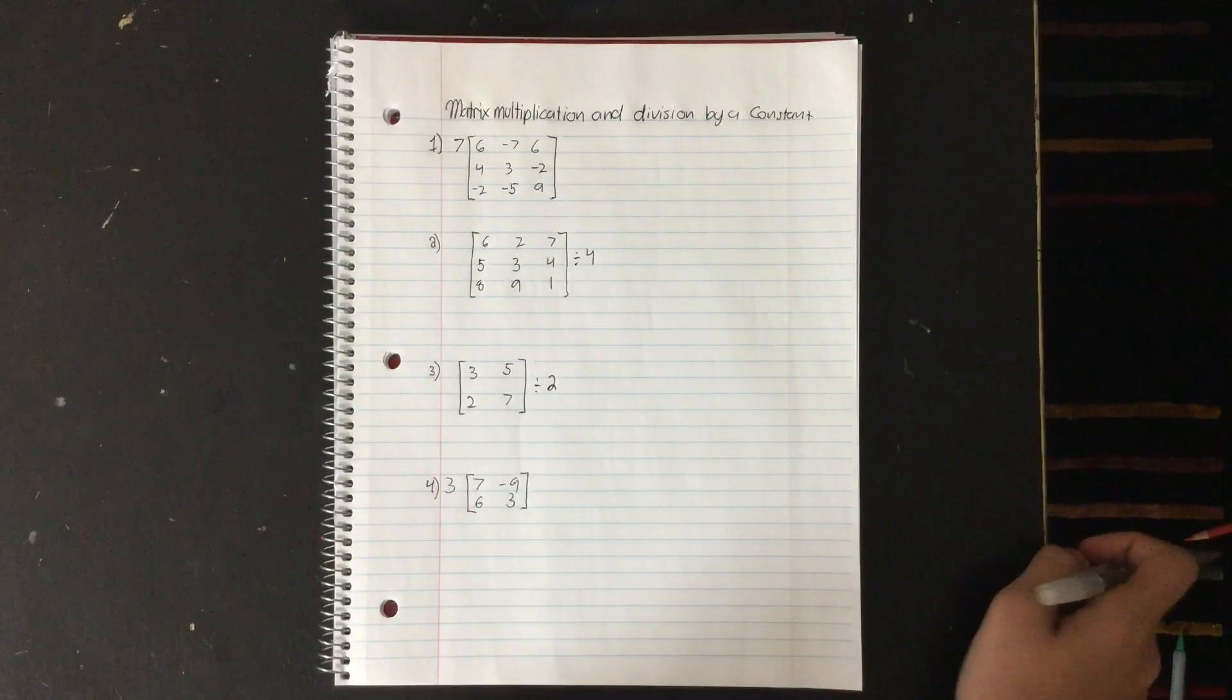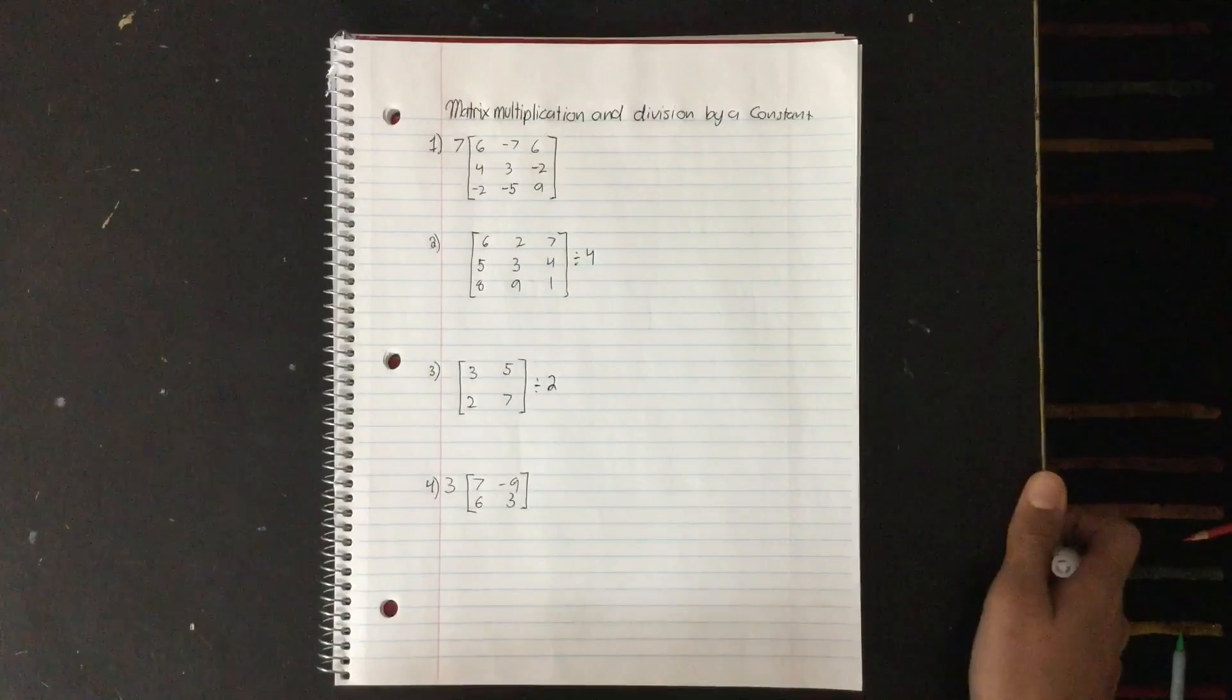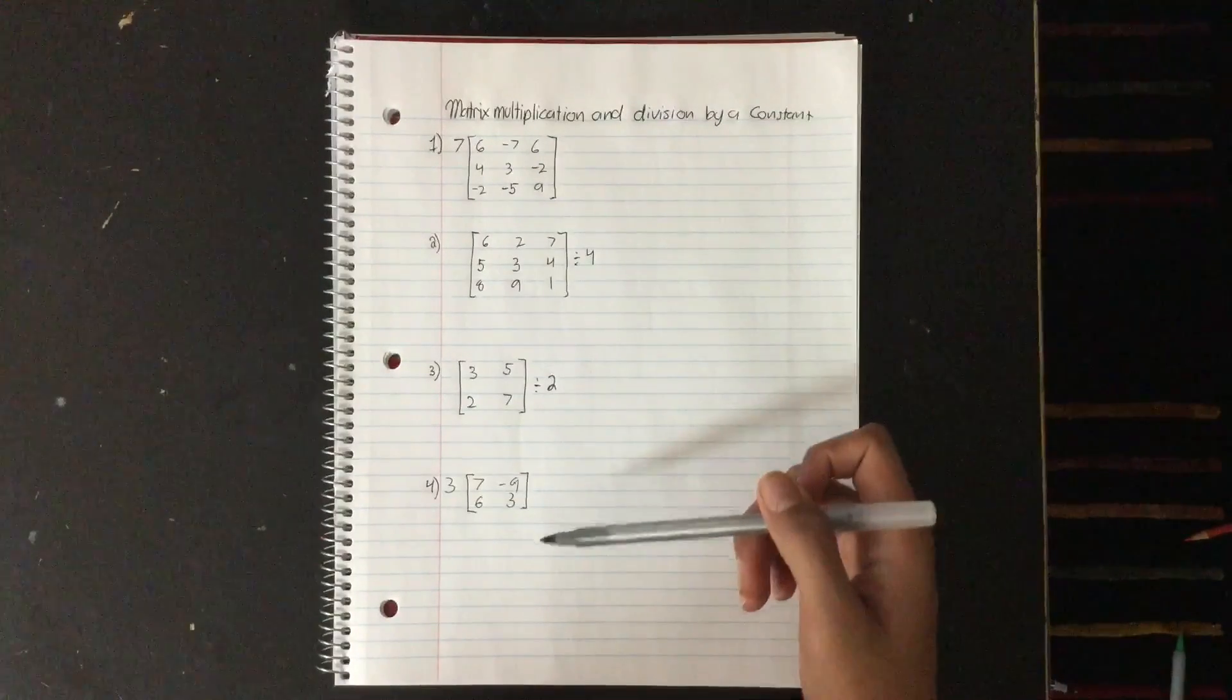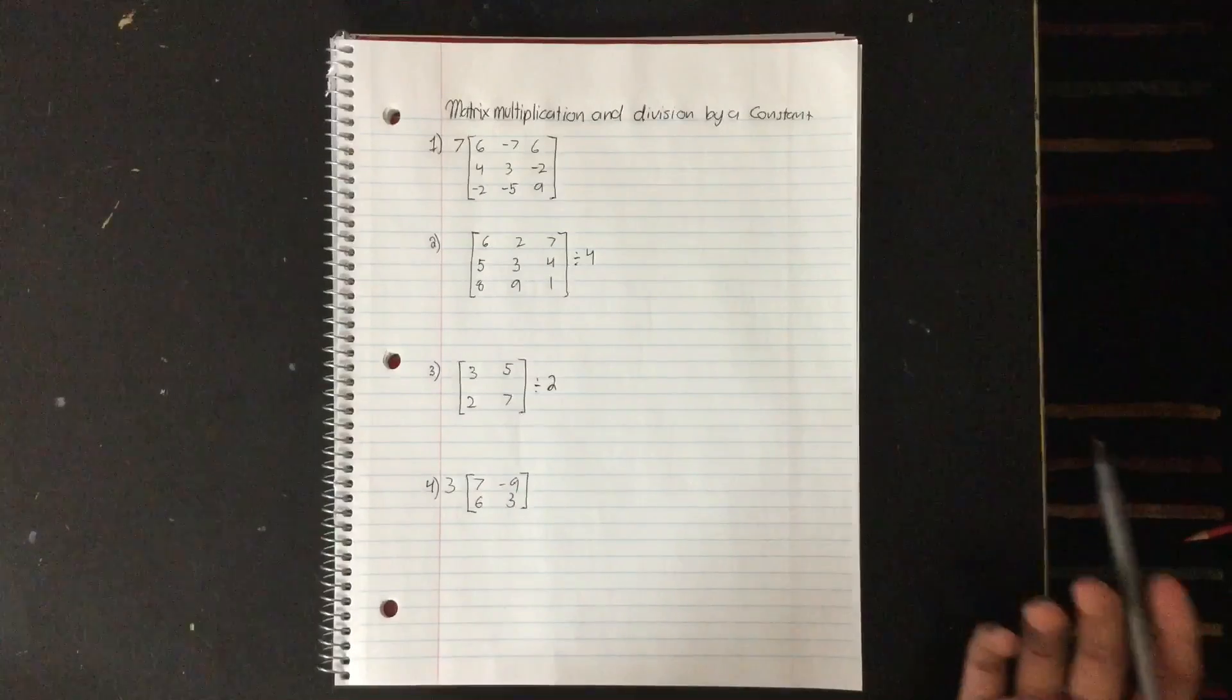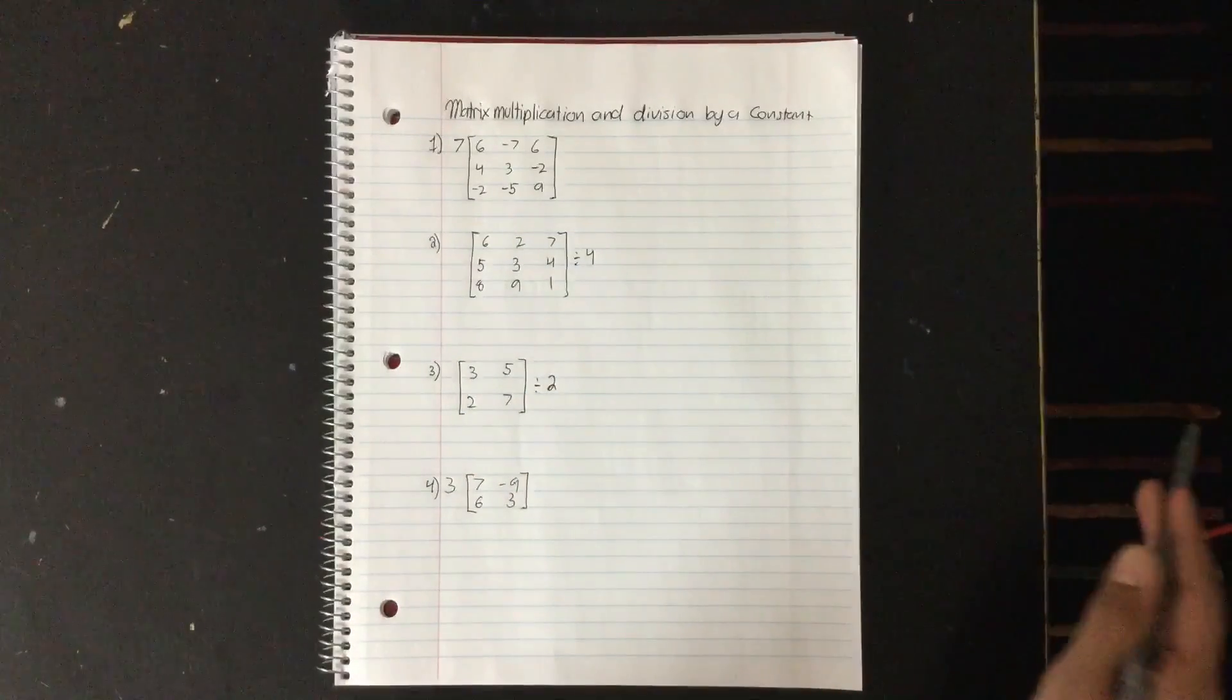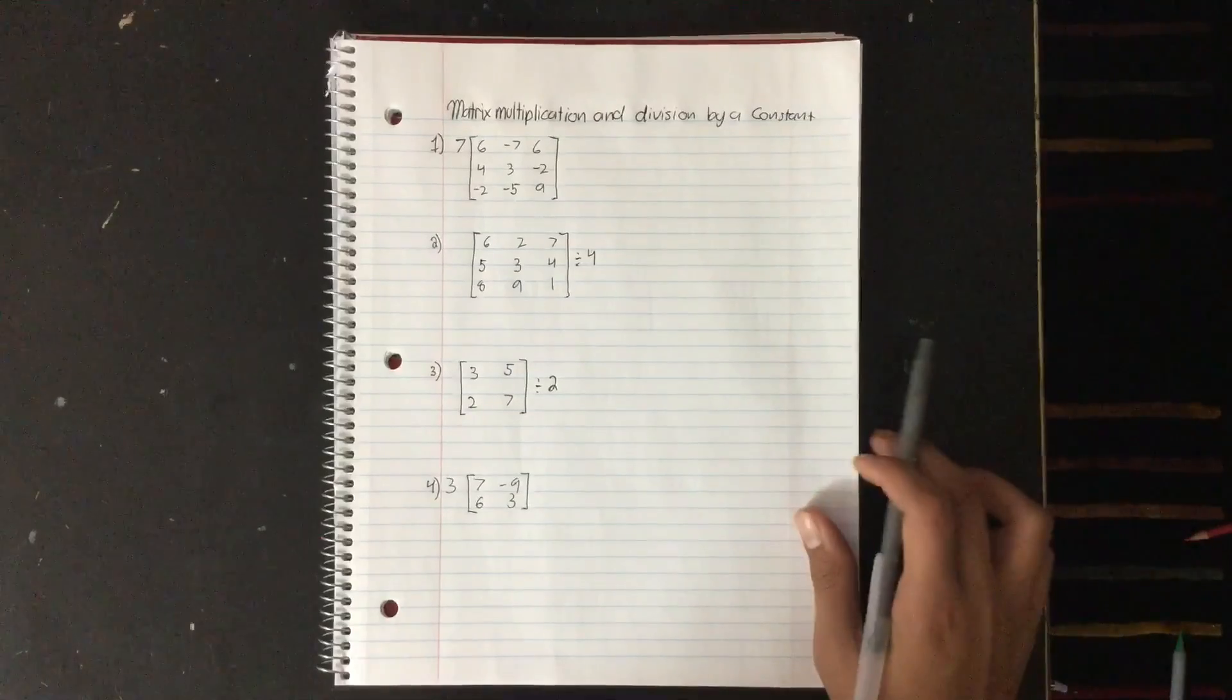Multiplying and dividing a constant by a matrix is actually really simple. So here I have some sample problems, and we're just going to quickly solve them, and hopefully while I'm doing this, you'll get a brief idea on how to multiply and divide a constant by a matrix. So let's get started.